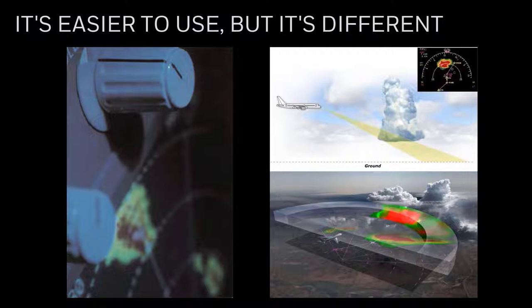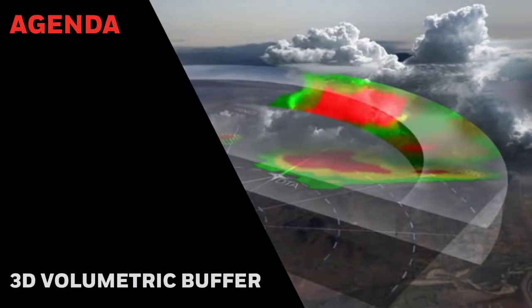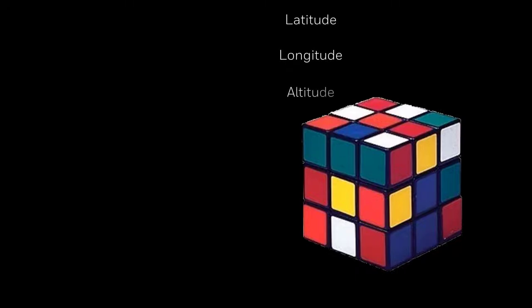The RDR 4000 is subject to the same physical limitations as conventional radar, but provides modes to help reduce workload. This module examines the heart of the RDR 4000 system — the 3D volumetric buffer. A buffer is simply a storage area for information. We store the radar-collected information in memory organized in three dimensions: latitude, longitude, and altitude. For each location in the 3D buffer, we store associated information like range, reflectivity, turbulence, and whether returns came from weather or ground.